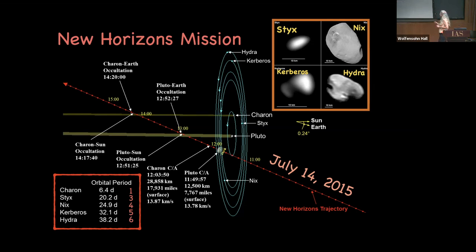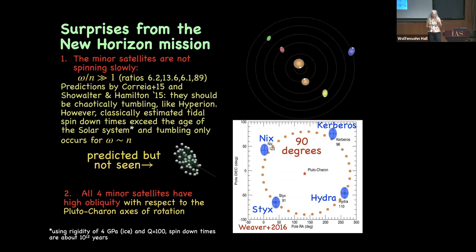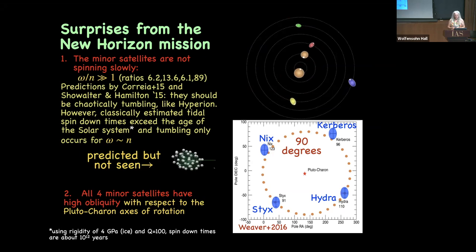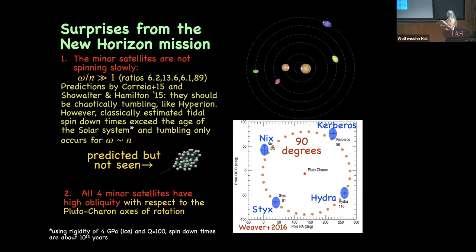These satellites have near-integer ratios with the Pluto-Charon rotation period. You can think of Pluto and Charon as a binary system, and these are moons in a circumbinary orbit — low eccentricity and low inclination. So they were probably born in this configuration. There were two surprises from the early New Horizons mission data. Because most moons are tidally locked in the solar system, the expectation was they would be nearly tidally locked. What was predicted was that they would be tumbling like Hyperion.